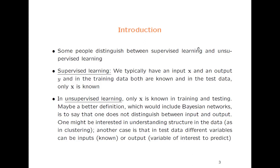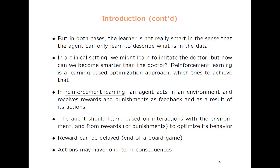In unsupervised learning, only x is known in training and in testing. Maybe a better definition is to say that one does not distinguish between input and output, as in Bayesian networks. Goals may include understanding or learning about the structure in the data, as in clustering. Another case is that in the test data different variables can be inputs or outputs. But in some sense the learner is not really smart — the agent can only learn to describe what is in the data, and sometimes that's not enough. In a clinical setting we might want to learn to imitate the doctor — that would be supervised learning — but can we become smarter than the doctor? Reinforcement learning is a learning-based optimization approach which tries to achieve that.